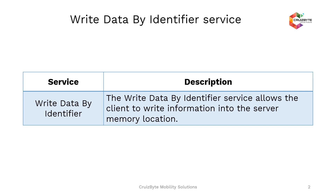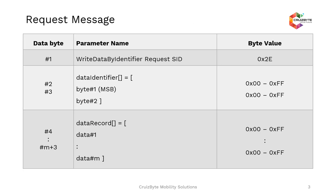As discussed previously, a data identifier is 2 bytes of data, followed by whatever value you want to write, sent as a data record. These data records are internally written into the ECU memory location. The service ID is 0x2E.